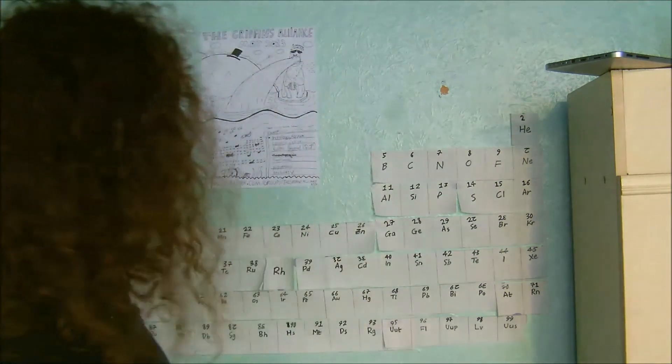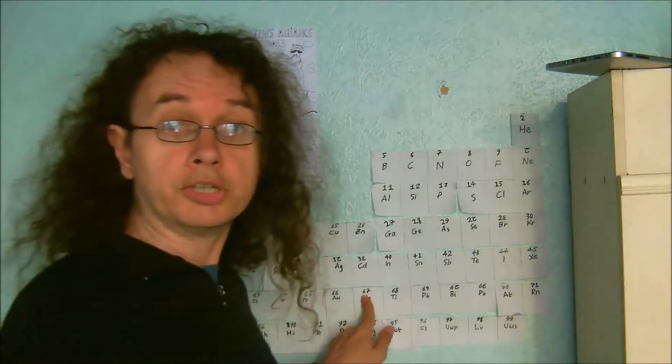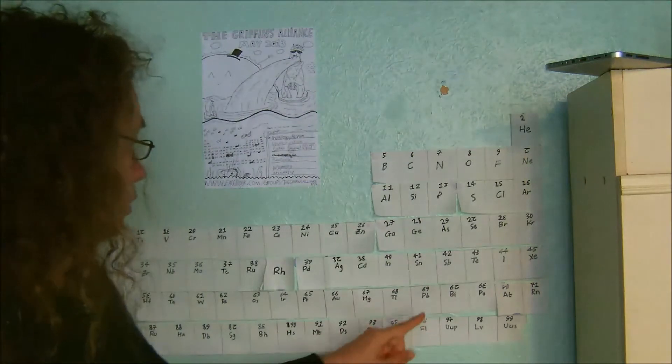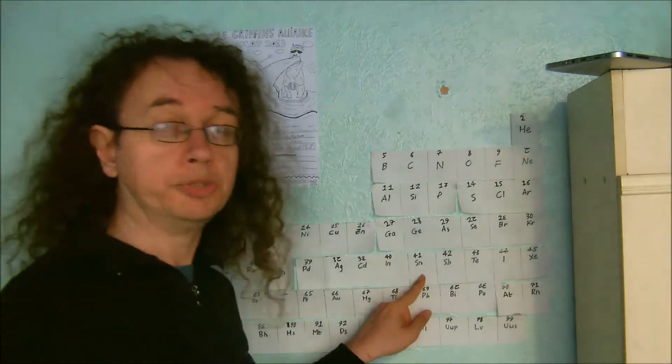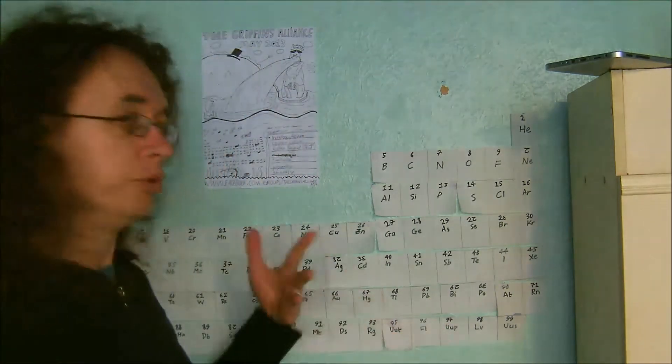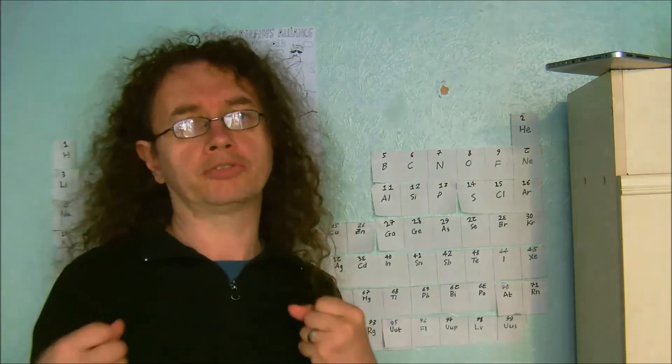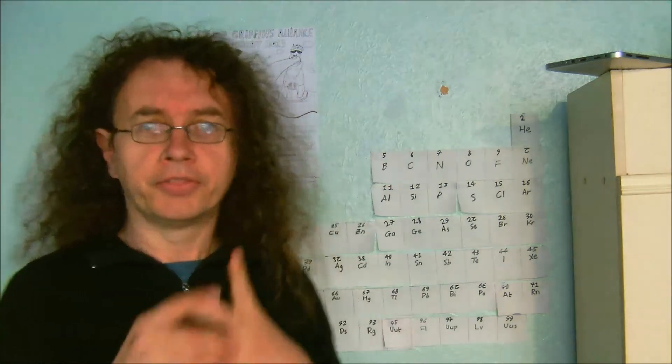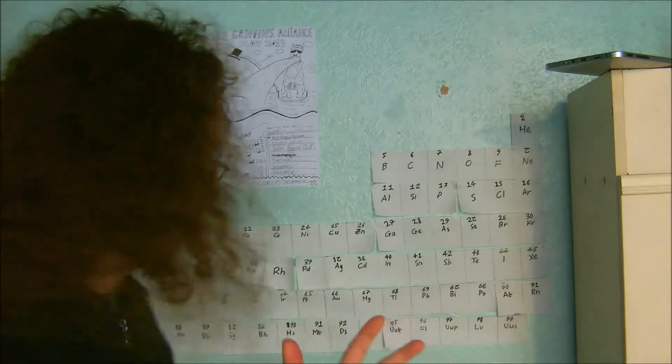Those are the ones that were familiar in pre-modern times to people. For example, you've got mercury, which is obviously associated with Mercury, tin which is associated with Jupiter, lead that's associated with Saturn, and so forth. So you can see that they were around in ancient times and more recently because they could be extracted fairly easily.